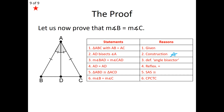We already have one pair of equal sides from the given, and the angle bisector gives us a pair of equal angles. These two smaller triangles, ABD and ACD, share the common side AD, which equals itself by the Reflexive Property of Equality. So we have Side, Angle, Side — we can declare triangles ABD and ACD congruent by the Side Angle Side congruence postulate.